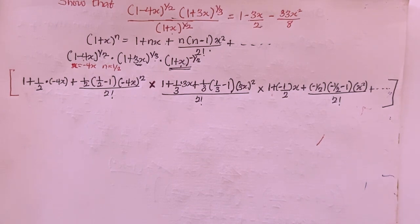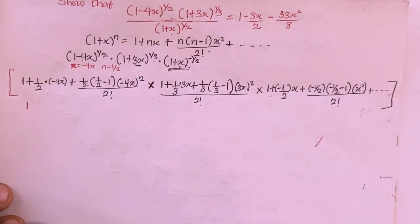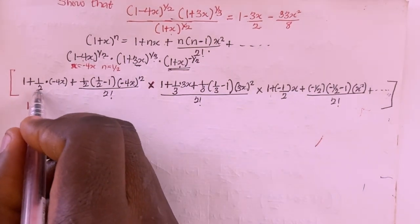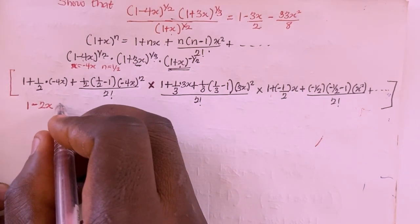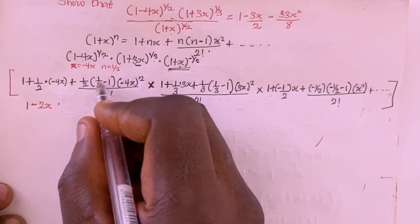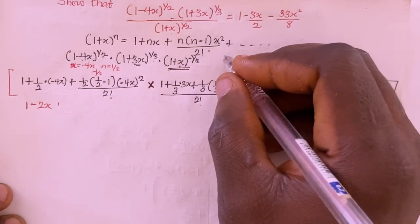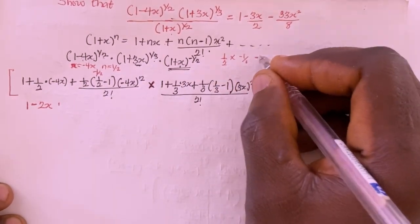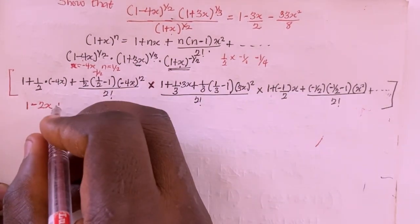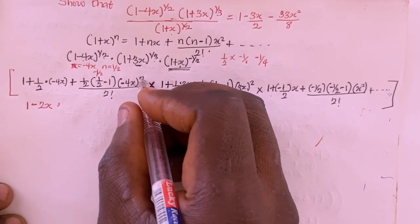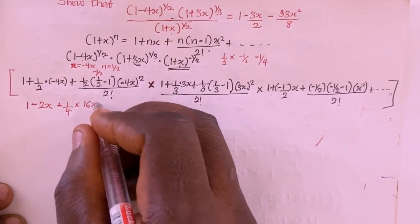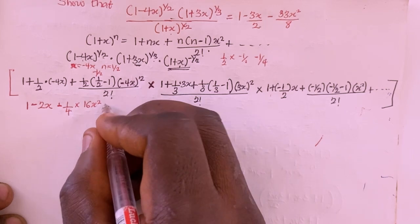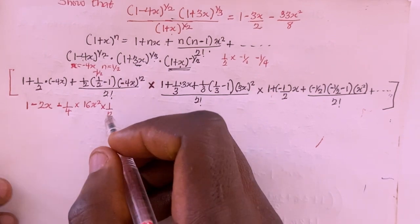Now I'll simplify the first expansion step by step. We get 1 + (1/2)(-4x) = 1 - 2x. Then (1/2 - 1) = -1/2, and (1/2)(-1/2) = -1/4. So the x² term is (-1/4)(16x²) divided by 2 factorial. Since 2 factorial = 2, multiplying by 1/2 gives (-1/4)(16x²)(1/2) = -2x². So the first expansion simplifies to 1 - 2x - 2x².